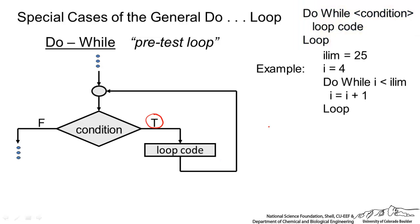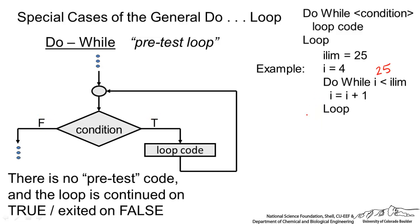An example, let's say we define ilim as 25. We set i equal to 4. And we do while i is less than the limit. And each loop we add one to i. So we would start with i equal to 4. Then we would say i would be 5, 6, 7, and all the way up to 25. When i is 25, 25 is not less than ilim. So in that case this would be false and we go out of that loop. And you will notice here there is no pretest code. And the loop is continued on true and exited on false.